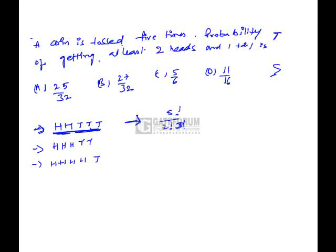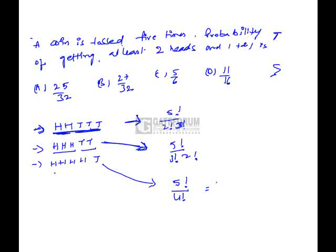So it is 5! / (2! × 3!) = 10. Similarly, 3 heads and 2 tails gives 5! / (3! × 2!) = 10. And 4 heads and 1 tail gives 5! / (4! × 1!) = 5. Total number of favorable cases: 10 + 10 + 5 = 25.